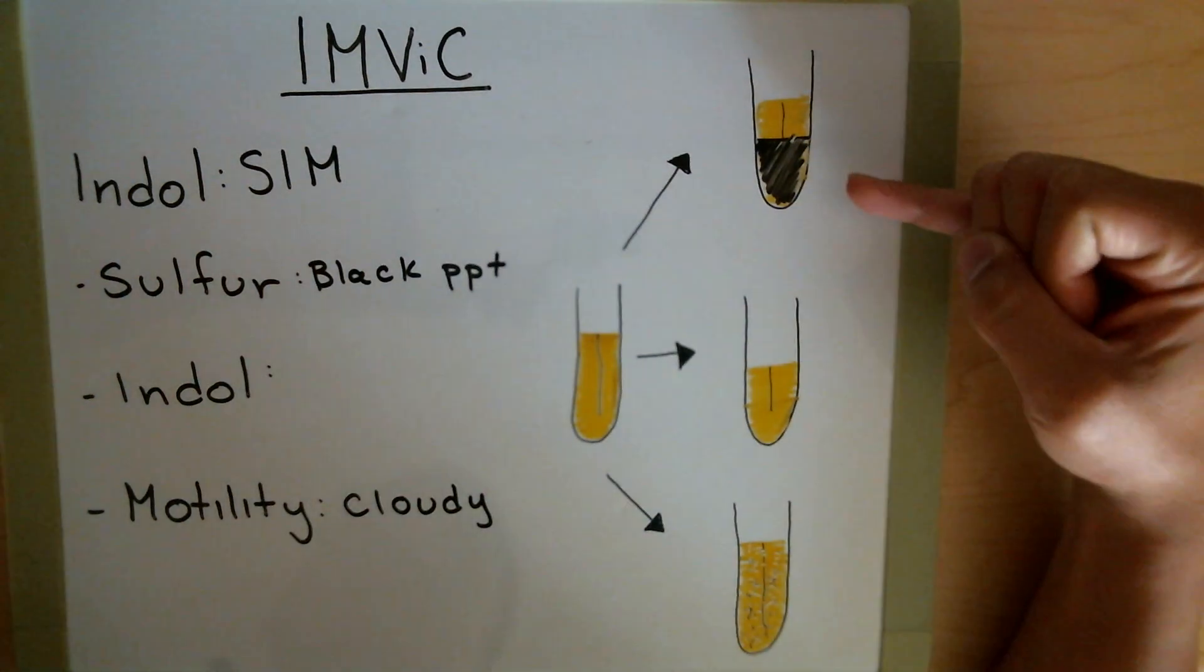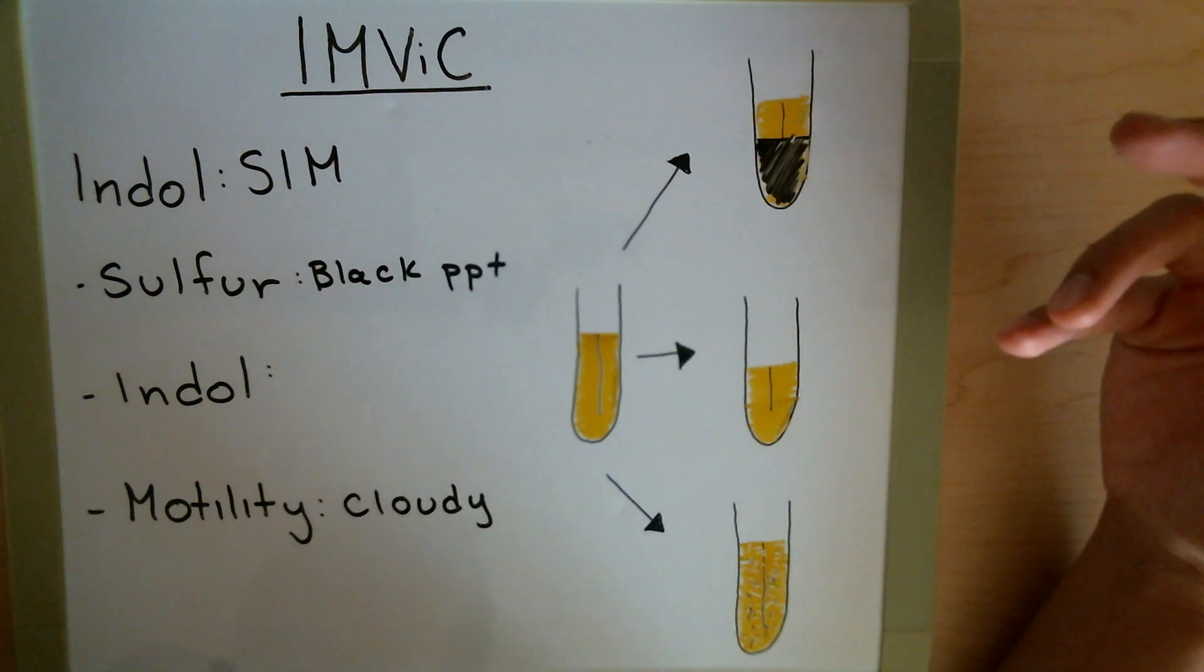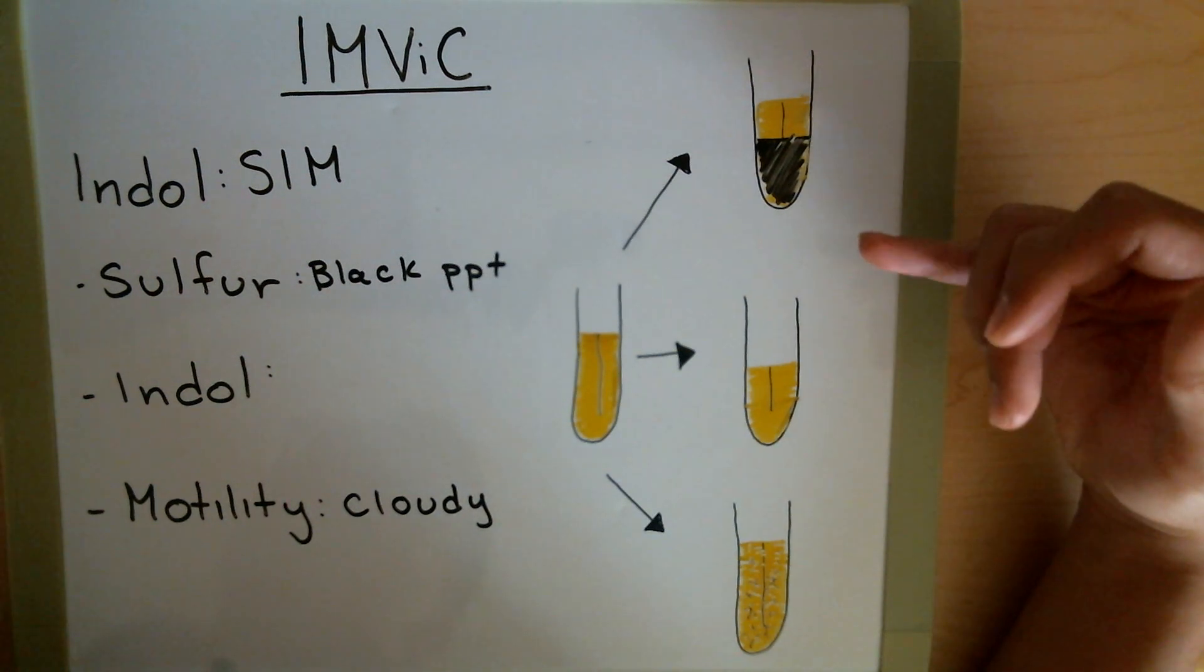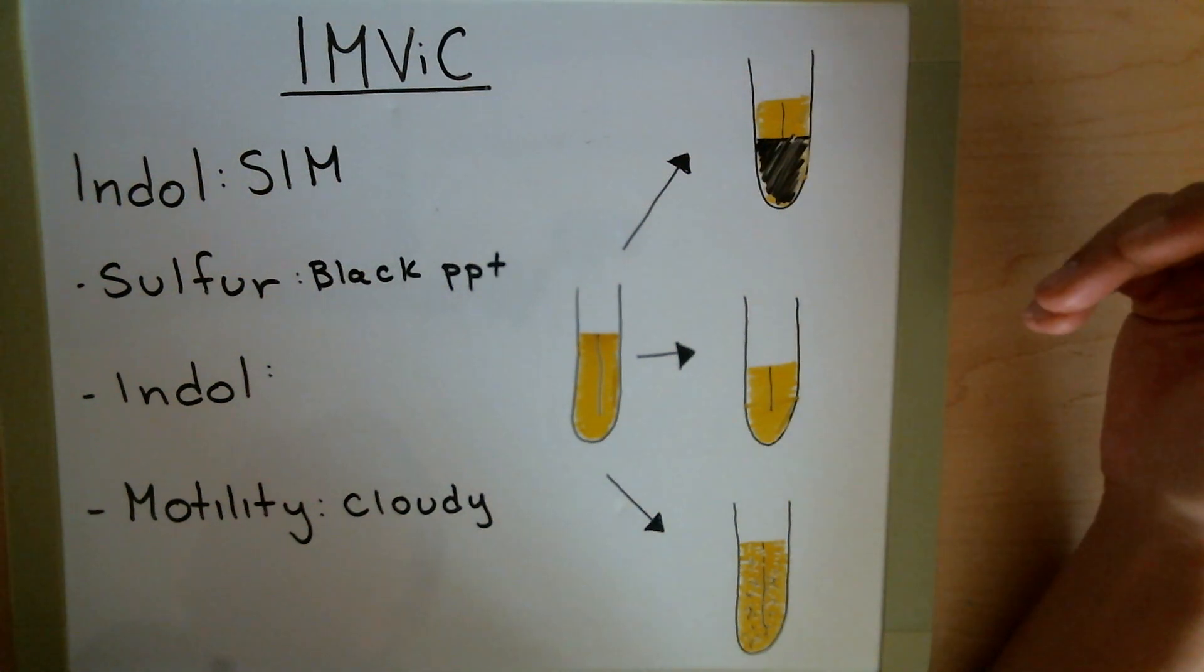With sulfur, we can see here that a large portion of the test tube is black, meaning that sulfur was produced. The amount of sulfur can vary. You're just looking for the presence of some kind of black precipitate. If it's there, it's there. Pretty definite.